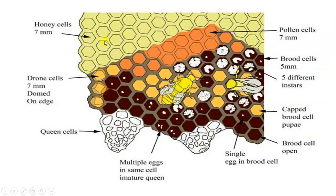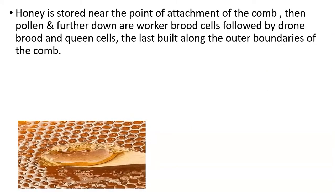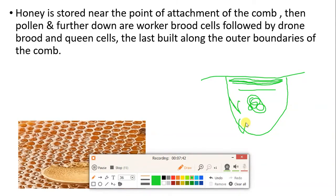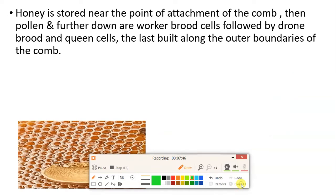In the Apis indica hive, the upper portion is used for storage of honey, the lower portion for storage of pollen grains, and the center region contains the brood cells — where the egg, larval, and pupal stages are present. Drone cells are also present, and the large, narrow, elongated cells are the queen cells. The honey is stored at the uppermost point of attachment to the tree branch, with pollen below it, then brood cells, then drone cells, and queen cells at the boundary of the hive.